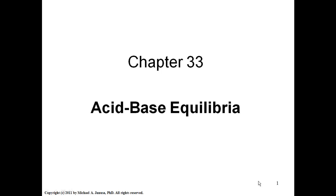At the end of last chapter, we calculated the pH of a strong acid and the pH of a strong base. Those are the easiest calculations for finding the pH of a solution. What we're going to do now is move into the next step, where we're calculating the pH of a weak acid or a weak base. From there, we'll move on to even more difficult calculations.